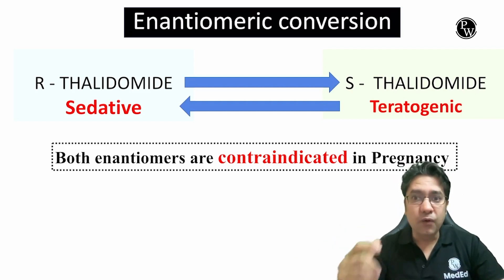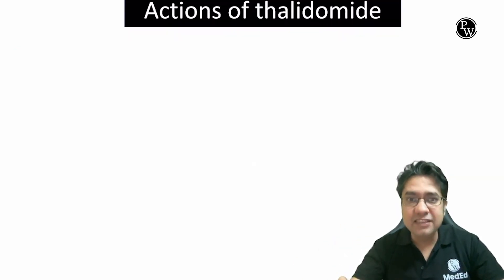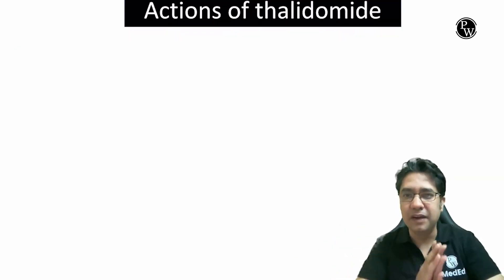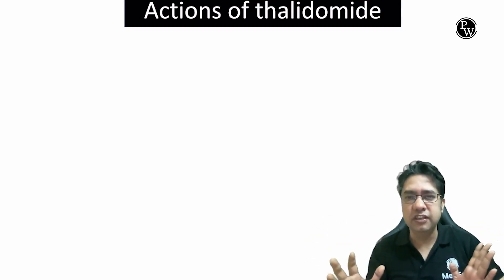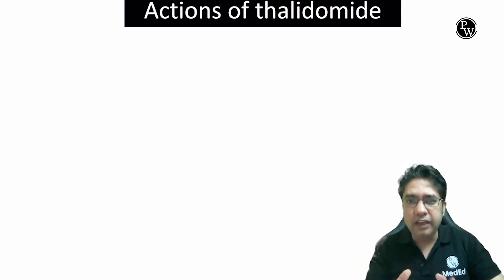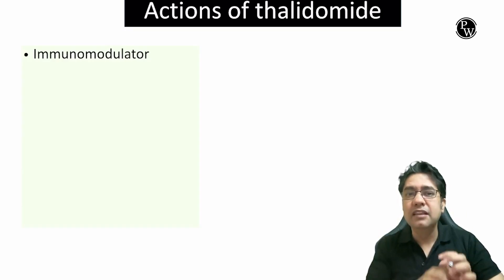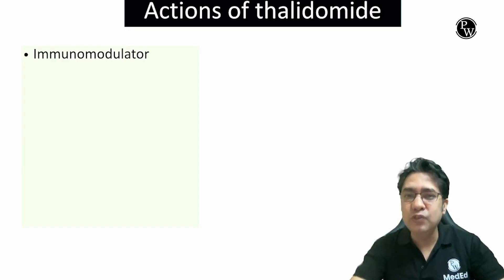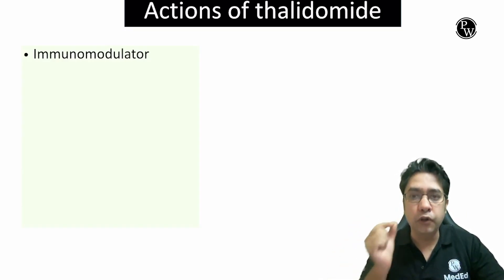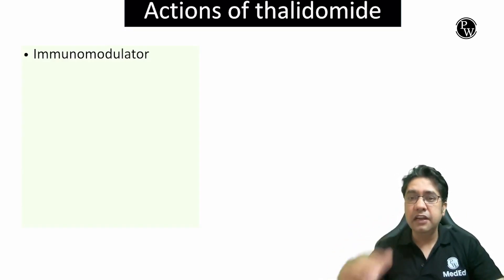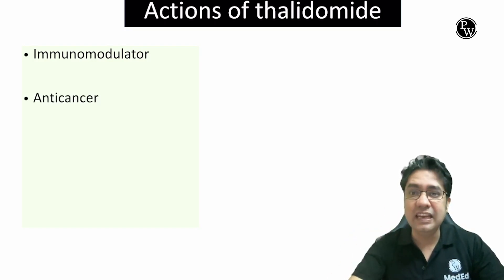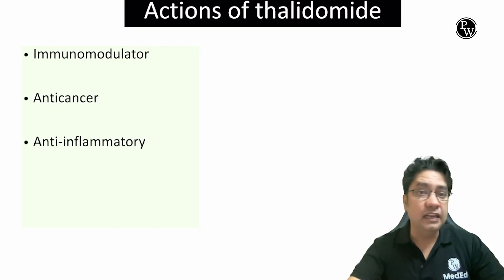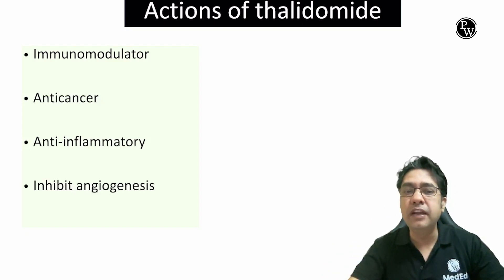Now let's see what is the mechanism of action of Thalidomide. Thalidomide has a variety of actions. At present time, Thalidomide is used as an immunomodulator drug. It reduces immunity. It is used as an anti-cancer drug and it also has anti-inflammatory property.